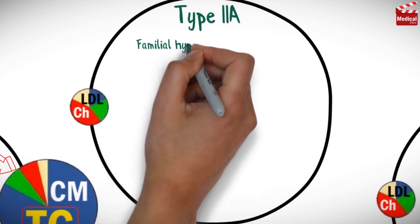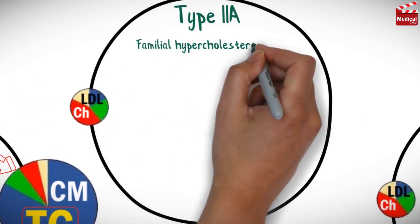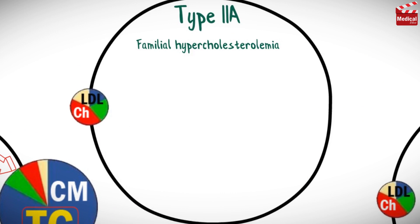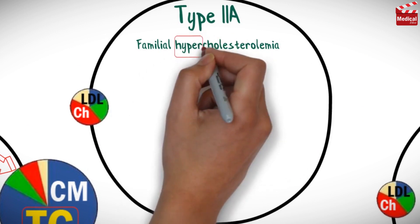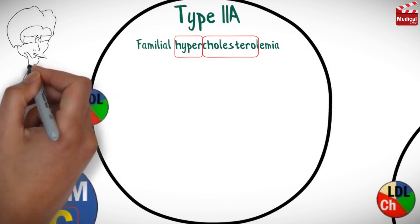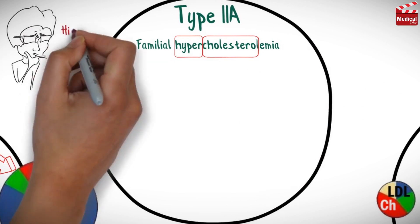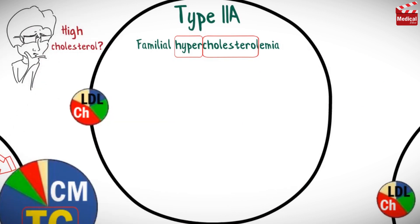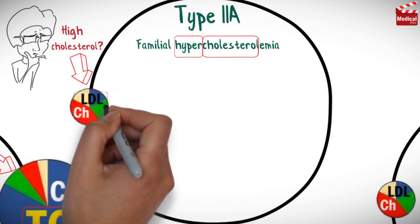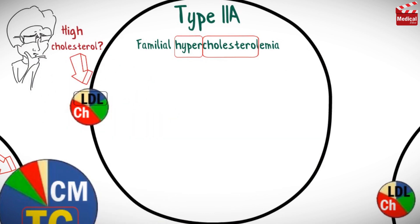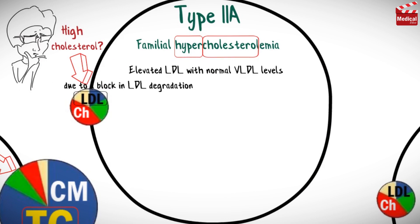Type 2A, familial hypercholesterolemia. In this case, it's obvious that there is a high amount of cholesterol in the blood. The lipoprotein with the highest amount of cholesterol is LDL. So this type is characterized by elevated LDL with normal VLDL levels, due to a block in LDL degradation.